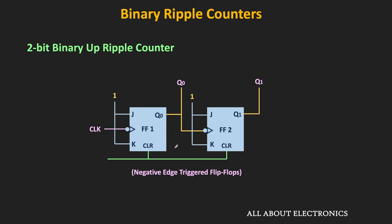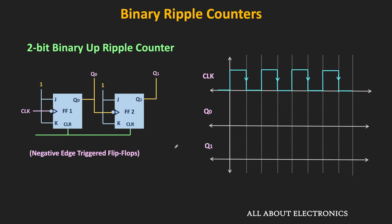Let us understand the working of this 2-bit ripple counter with the help of the timing diagram. Initially, with the help of the clear input, all flip-flops have been reset to 0. These periodic clock pulses are applied to the clock input of the first flip-flop. Since the flip-flops are negative-edge-triggered, they will toggle at every falling edge of the clock signal. So Q0 output will become 1 at the first falling edge and remain 1 until the next falling edge, then toggle back to 0.